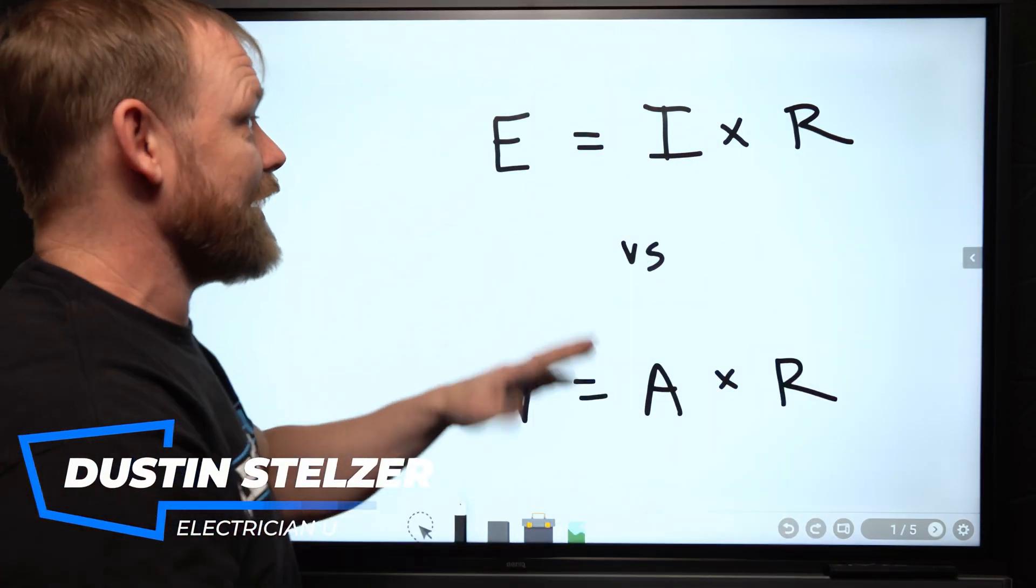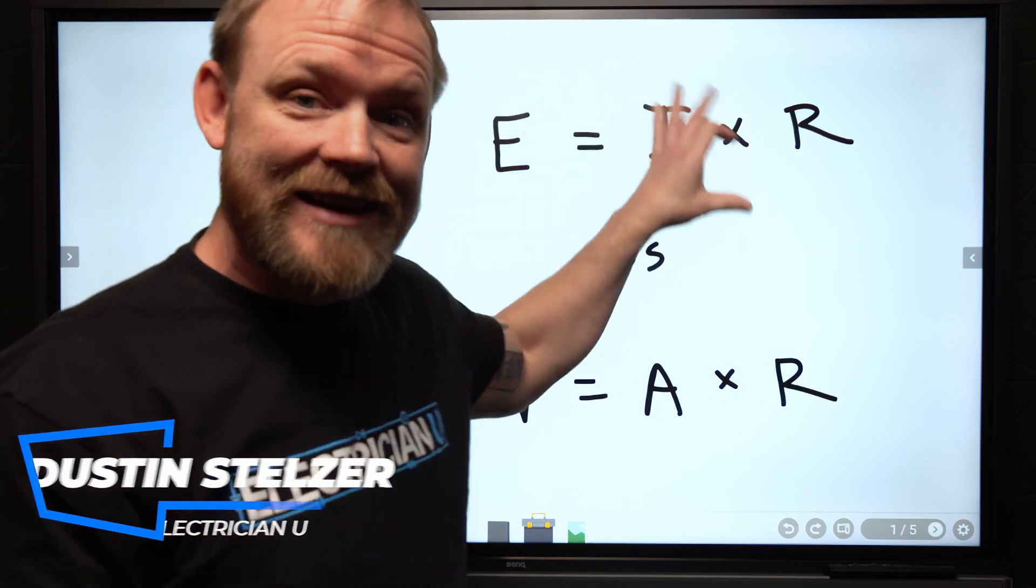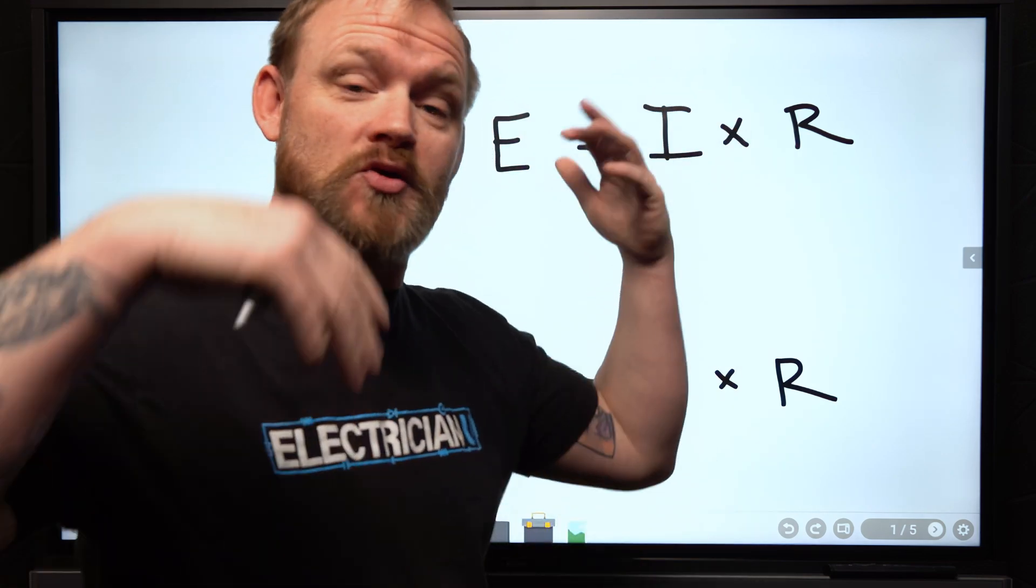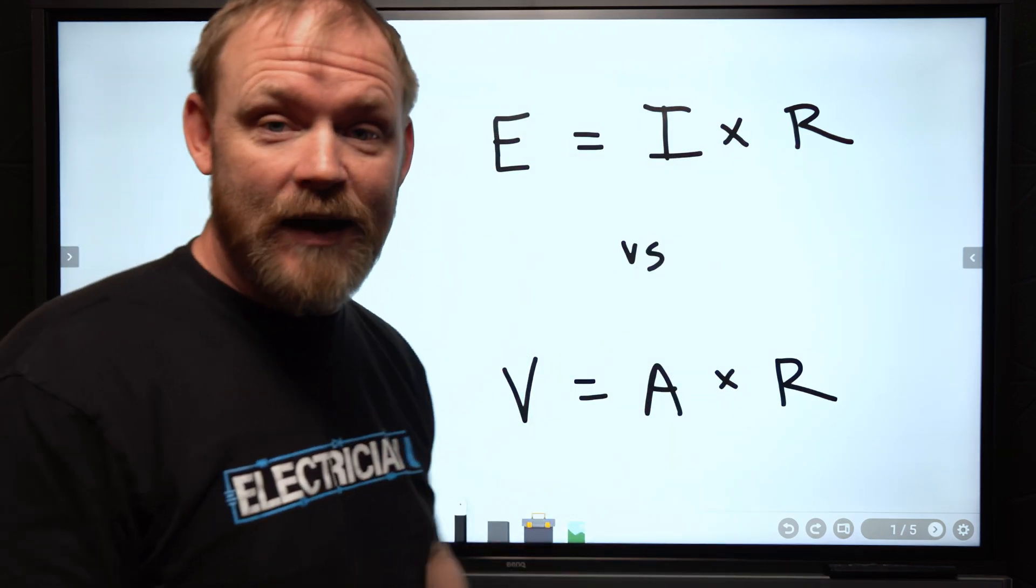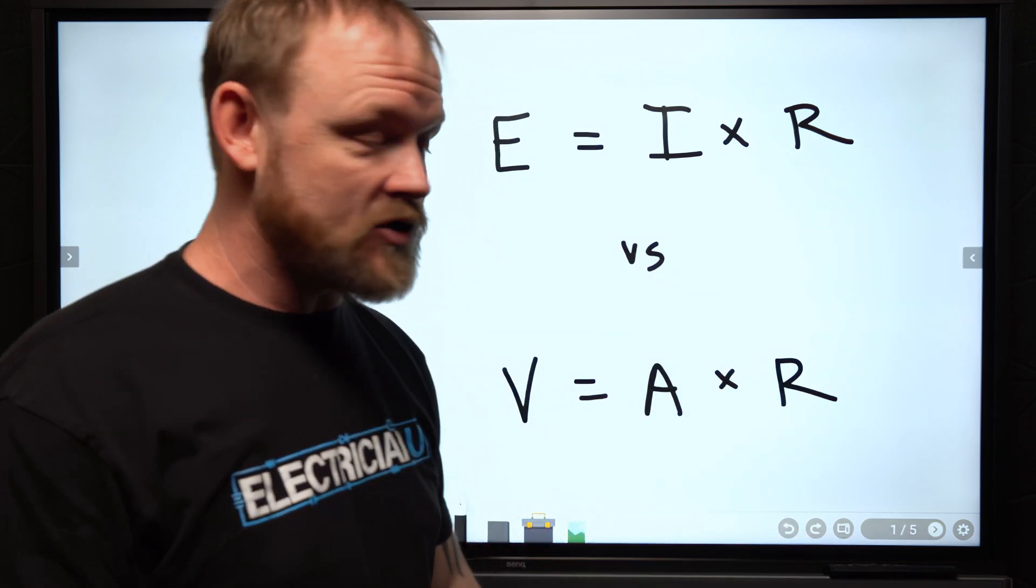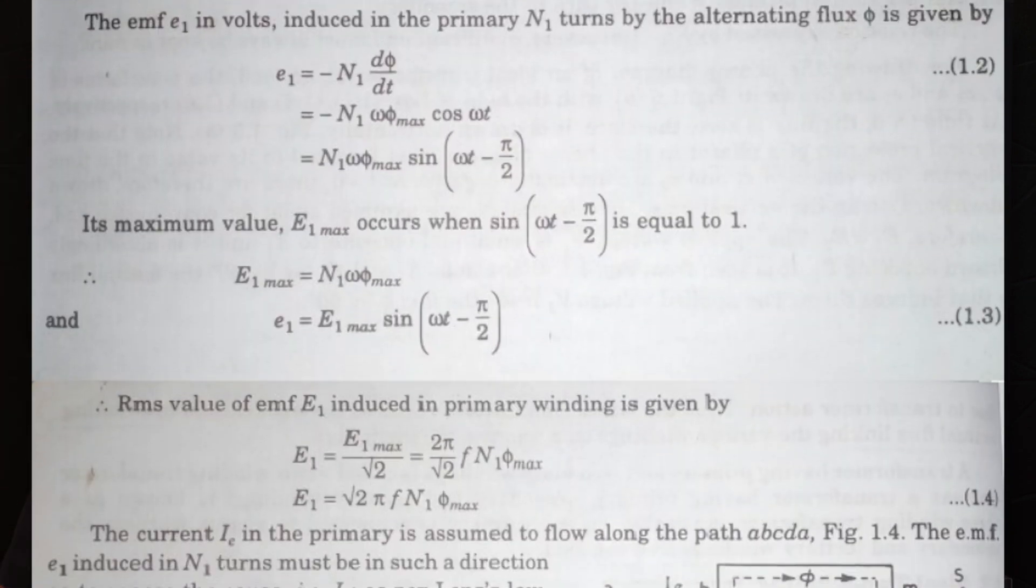Alright knuckleheads, we have a lot of people out there that have this whole debate that say you shouldn't be using E and I. Stop using that. It's so stupid. Just use V and A when you're talking about voltage and amperage. Like why use an E and an I? All the textbooks have it.